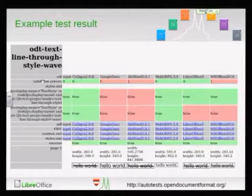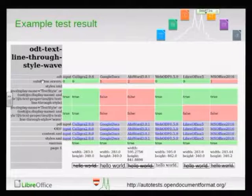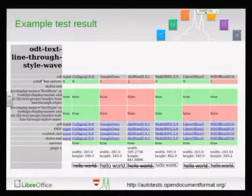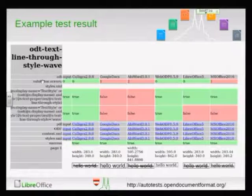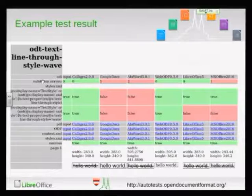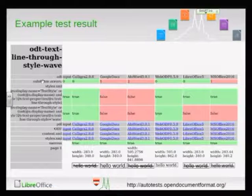This is how the summaries look. This was a test to see if all the office suites support a wavy line through text. Calligra shows correctly a wavy line through the Hello World, and the green boxes show that this feature was loaded and saved back correctly — the style properties were the same after loading and saving. Google Docs actually loses the information about the styling, and you can see in the picture there's no wavy line. Going to AbiWord, WebODF, LibreOffice, Microsoft Office, you can see quite some differences — most of them remember that there should be a line through the word, but not everybody supports it being a wavy line.